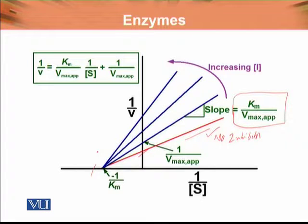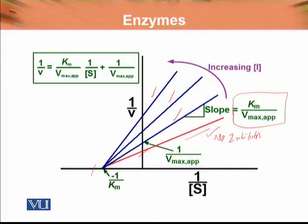Now, when we add some inhibitor, a new slope is formed. Then we add more inhibitor, and more inhibitor. We have already defined that this inhibitor is non-competitive and is causing a decrease in Vmax.